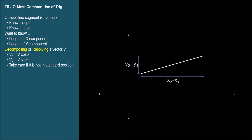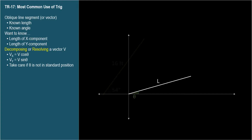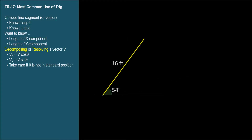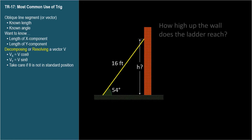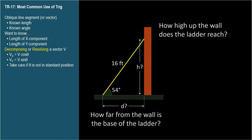But what if we only knew the length of the oblique line segment and the angle it makes with our coordinate system? Here's a 16-foot line segment at a 54-degree angle with the horizontal axis. It represents a ladder leaning against the wall. How high up the wall does the ladder reach, and how far from the wall is the base of the ladder?